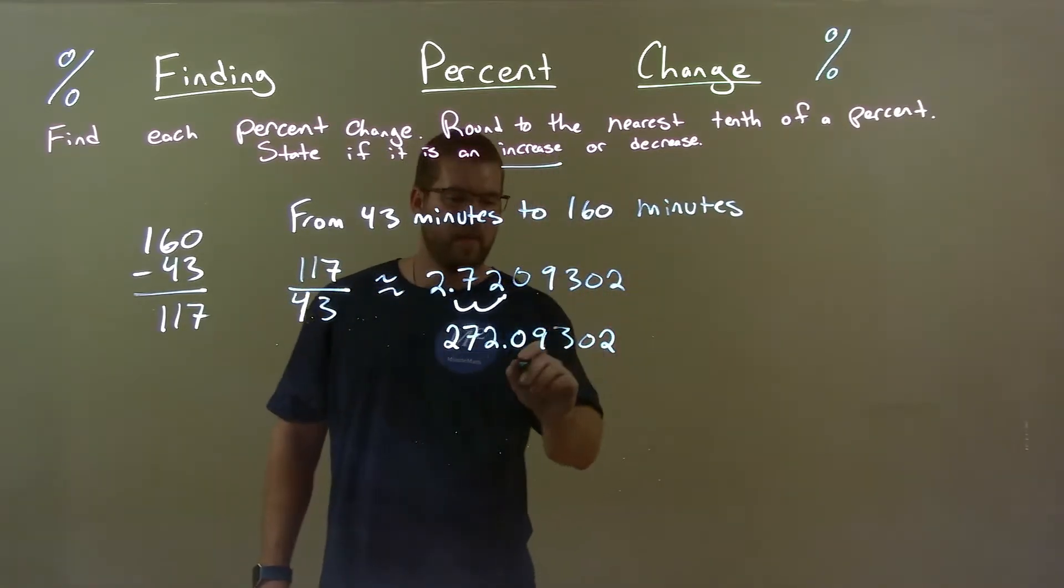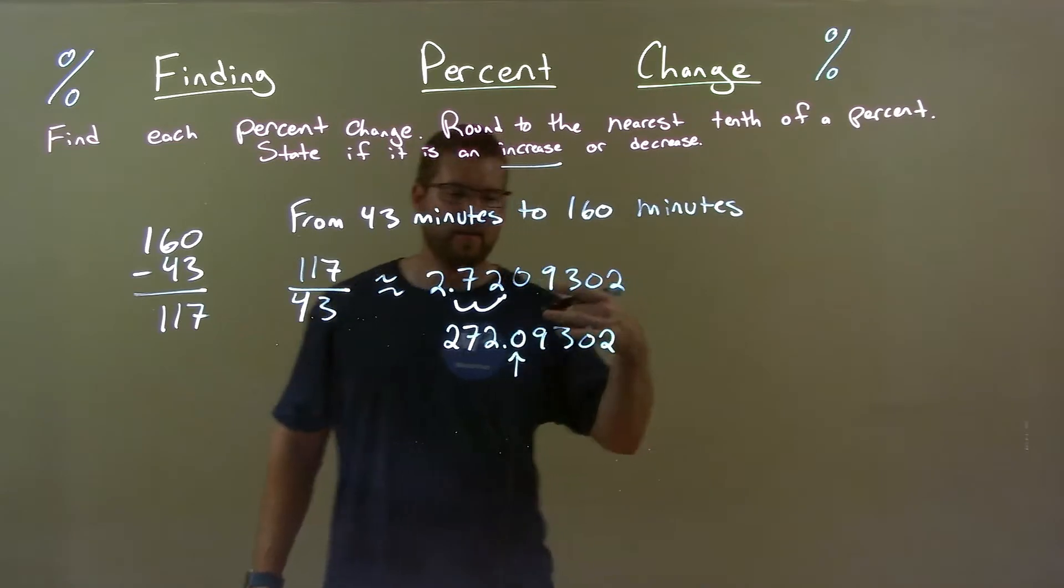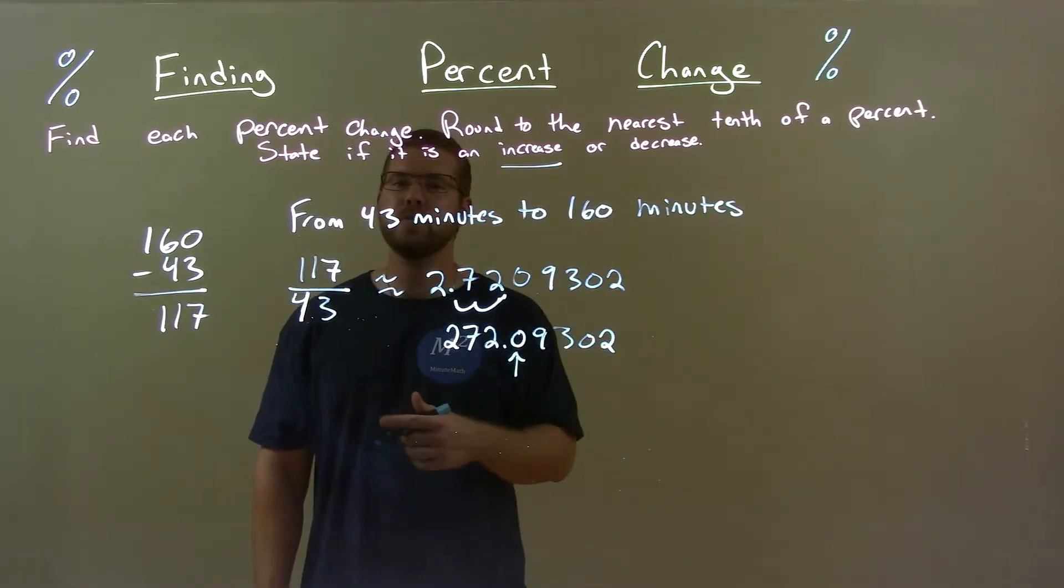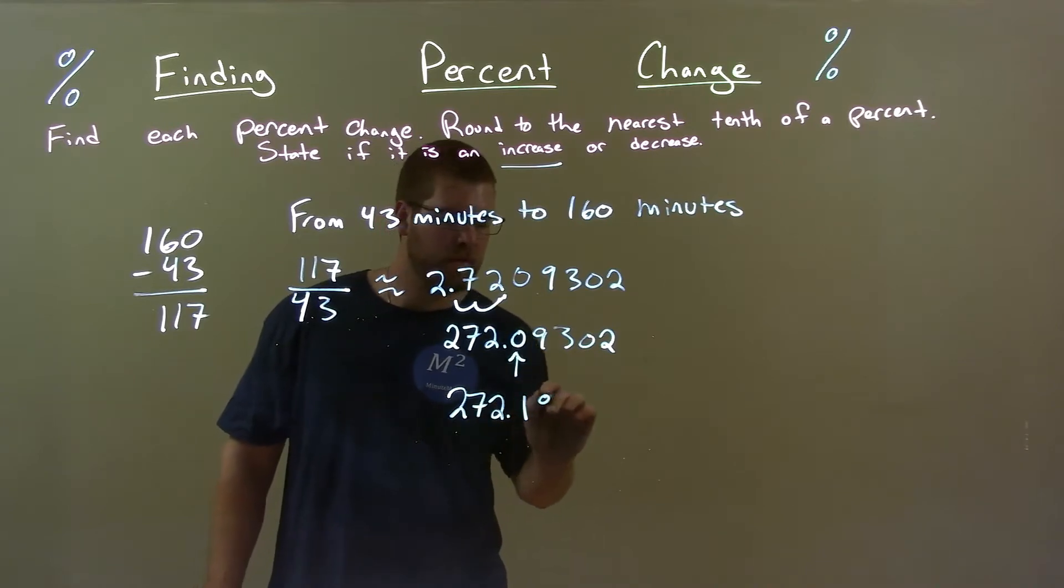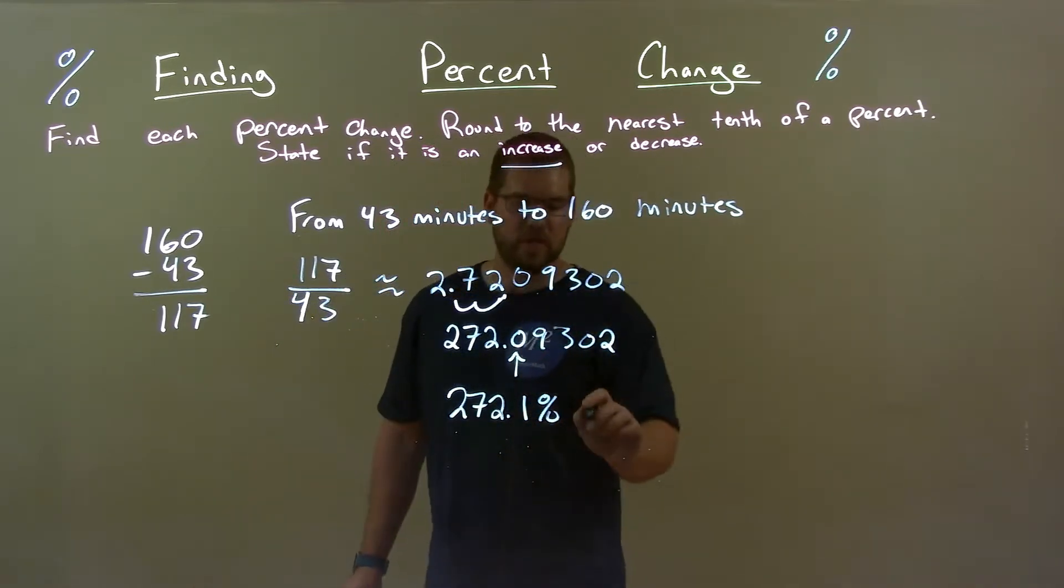Now we gotta round that. Look at the zero, look to the right, it's a nine. Nine causes the zero to go up by one. 272.1%. We said this was an increase.